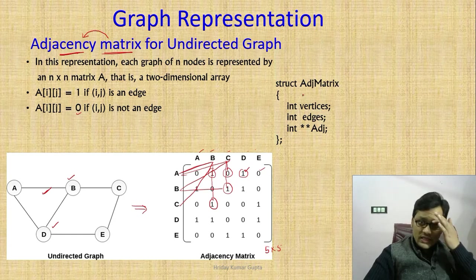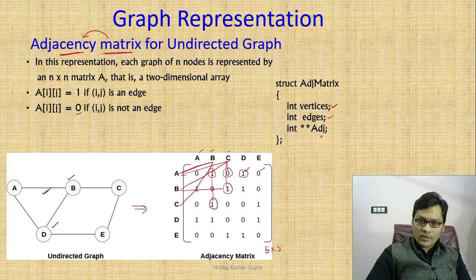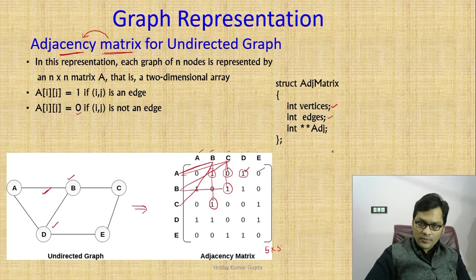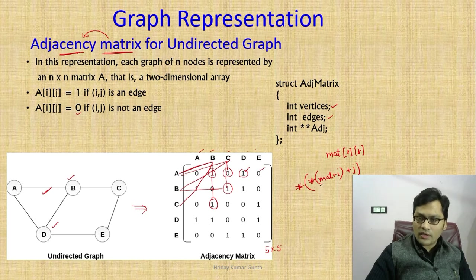From a programming point of view, we can make a structure for vertex and one for edge. We take an integer type and a pointer variable — double pointer — because we are going to discuss adjacency matrix. Matrix is represented by a double pointer. If we represent matrix[i][j] in pointer terms, that is *(*(mat + i) + j) — double pointer is used.